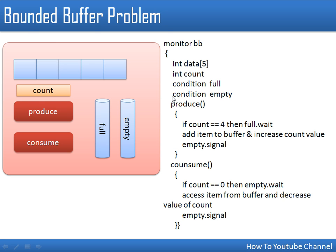Here is our complete monitor. The buffer is considered as shared data. We have two procedures: one for producing and one for consuming. The producer will use the produce function and the consumer will use the consume function. We have two conditional variables: one for when the buffer is full, where the producer has to wait, and one called 'empty' for when the buffer is empty, where the consumer has to wait. Conditional variables are implicitly implemented as queues and we can call three operations on them: wait, signal, and broadcast.